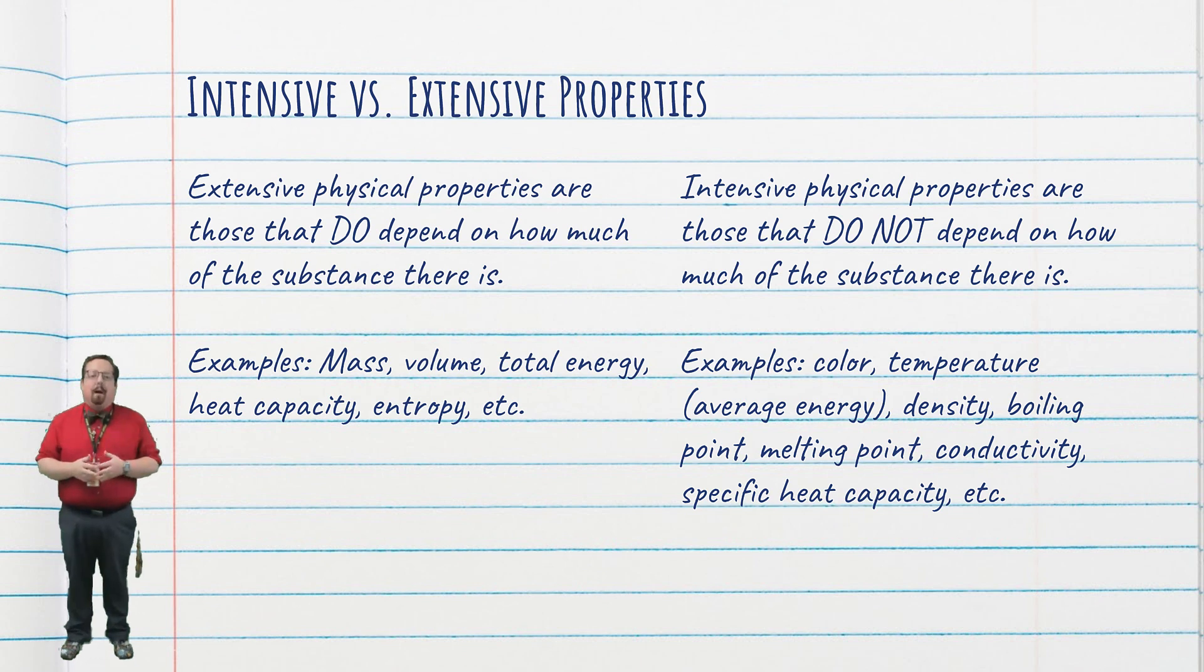There are two types of physical properties, extensive and intensive. Extensive physical properties change depending on how much of a substance you have. For example, the mass, volume, total energy, heat capacity, and entropy will all be different if you have a small amount versus a large amount. We'll learn about heat capacity and energy stuff later, but for now it's really easy to picture this idea if we think about mass and volume. If you have a larger object, it'll have more mass and more volume. The mass and volume are dependent on how large my sample is.